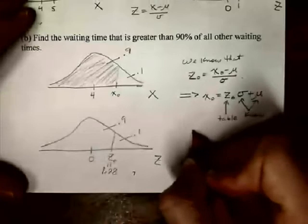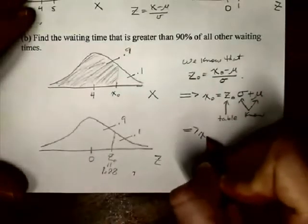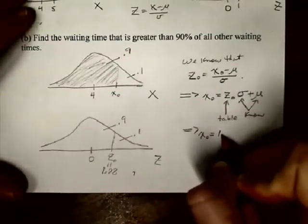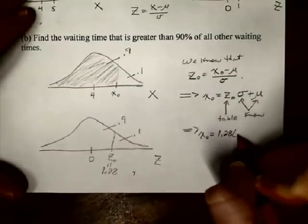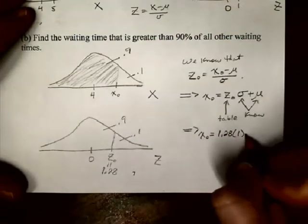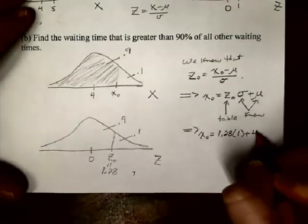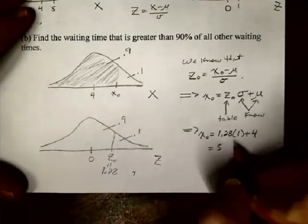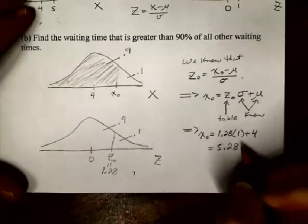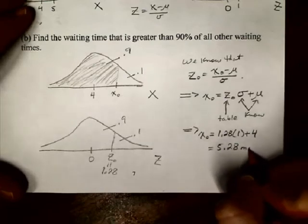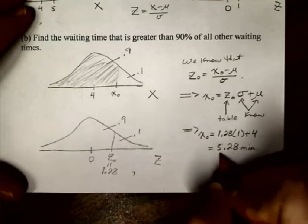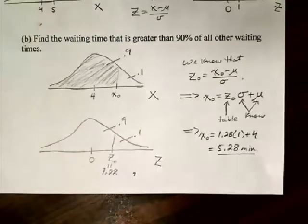So now my X naught then is 1.28 times 1, that's what sigma was, plus 4. So 5.28 here. That is in minutes. That is the waiting time that is larger than 90% of all other waiting times.